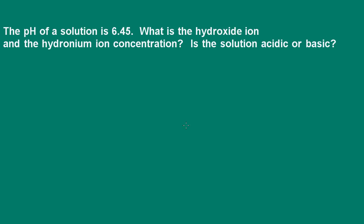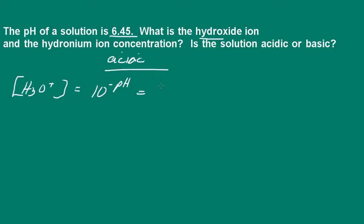Let's go to problem number two. Here we're told that the pH of a solution is 6.45. What is the hydroxide ion and the hydronium ion concentration? Is the solution acidic or basic? The pH here is below 7, so we have an acidic solution. Let's first determine the hydronium ion concentration. The hydronium ion concentration would be 10 to the negative pH, which is 10 to the negative 6.45, and that gives us 3.6 times 10 to the negative 7 molar.